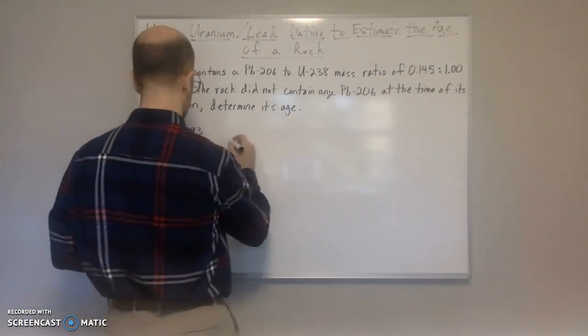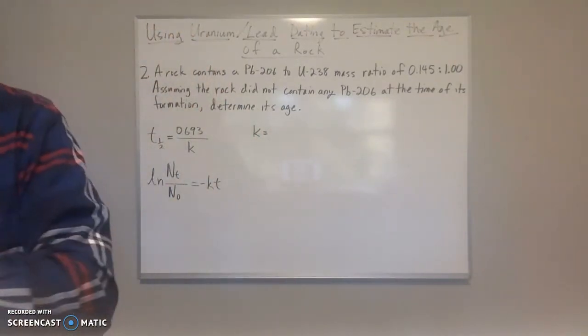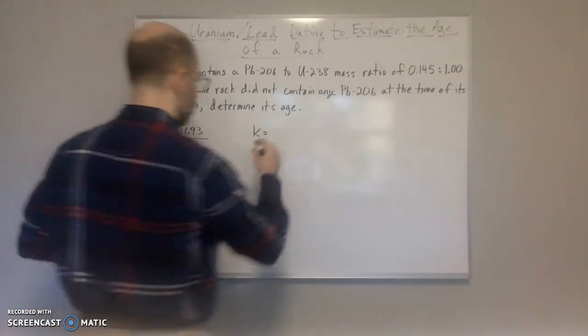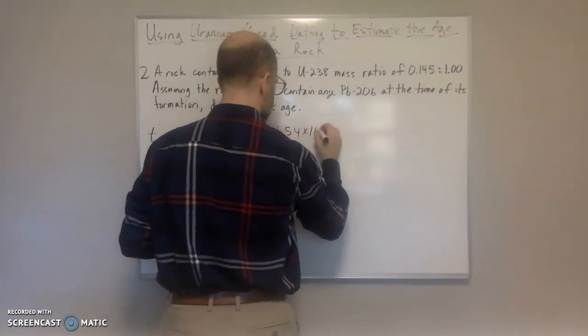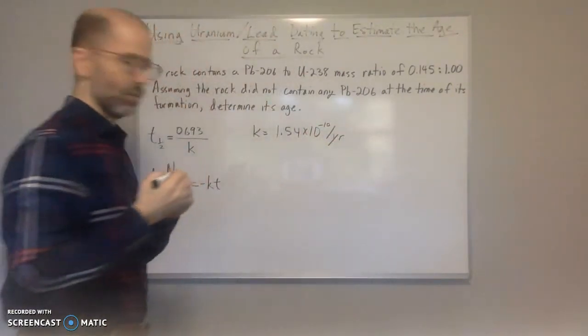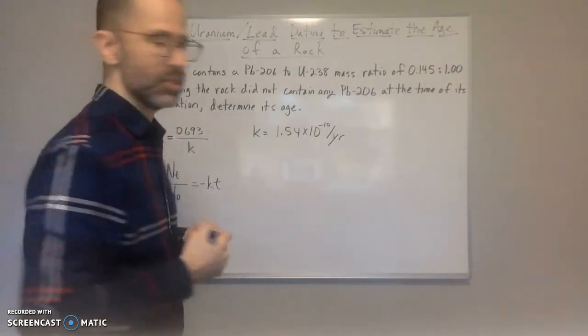Here we have the Pb-206. We're going to assume that that is zero at the time of formation. So here, again, we solved this before. K again is 1.54 times 10 to the negative 10 per year.